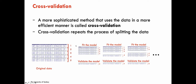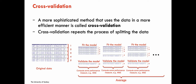We do this five times: parts 1,2,3,4 train and 5 tests; then 1,2,3,5 train and 4 tests; then 1,2,4,5 train and 3 tests; and so on. At the end, we obtain five measures of performance depending on each split. Essentially, we're splitting the data 80-20% but in different ways, computing performance statistics each time, and averaging all those performance statistics at the end.